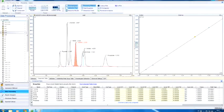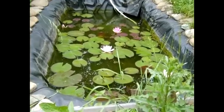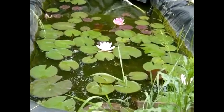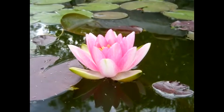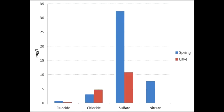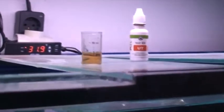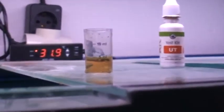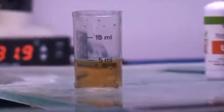We compared our results with results of the chemical content of a small garden lake and found out that there are no nitrates at all. The main point to reduce toxic substances from our aquarium was pH reduction to less than seven.